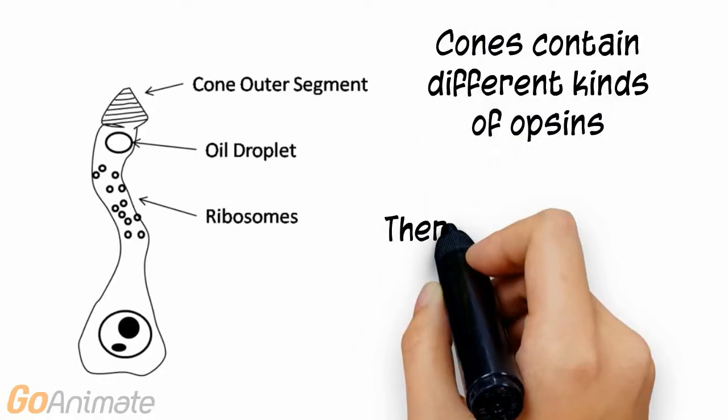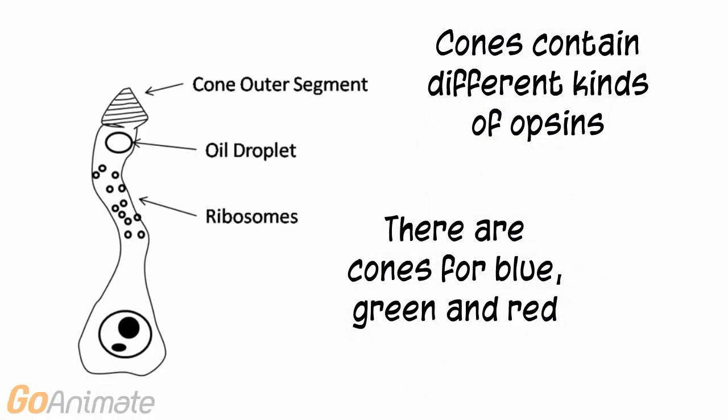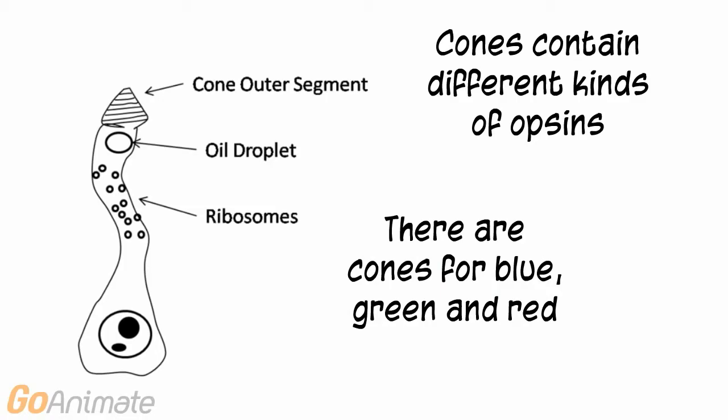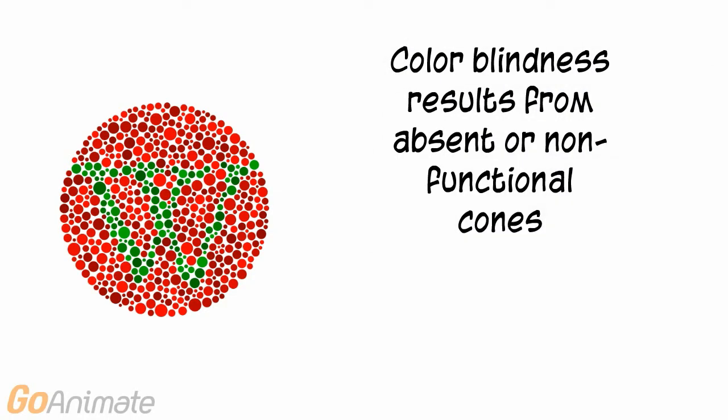Cones contain different kinds of opsins. There are cones for the three primary colors: blue, green, and red. Colorblindness results from absent or non-functional cones.